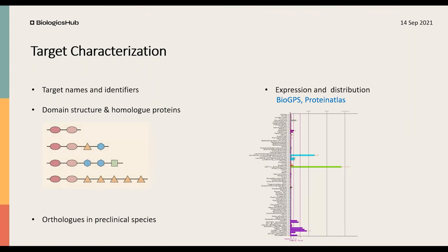The target characterization chapter gives a fundamental understanding of target biology, including target names and identifiers, target family, domain structure, and conservation. Information on other family members and highly homologous proteins is especially important when target selectivity is hard to accomplish or the target has low data density, requiring extrapolation from close family members. Target expression and distribution facilitates assessment of all non-intended target tissues and organs. Expression information for preclinical species, including homologs, is included to support choosing relevant preclinical species and extrapolating information between species and humans.